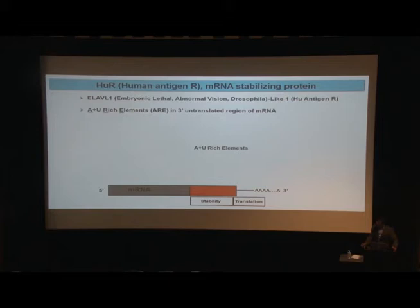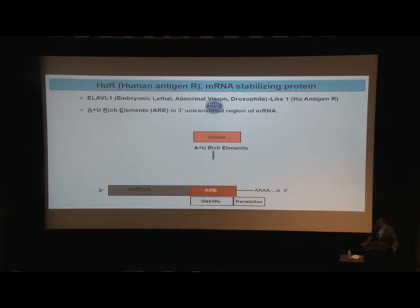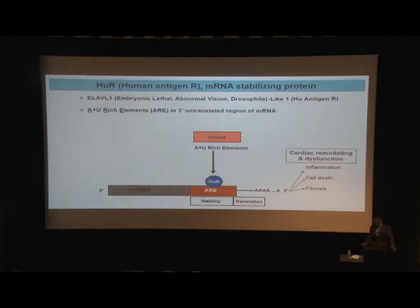One of the proteins we are most interested in is Human Antigen R, HUR, also known as ELAB1, which is an mRNA stabilizing protein. It binds to AU-rich elements, called AREs, in the three prime untranslated region of mRNA, and stabilizes various genes involved in inflammation, cell death, fibrosis, and stem cell function. Most of these processes can alter cardiac remodeling and dysfunction.